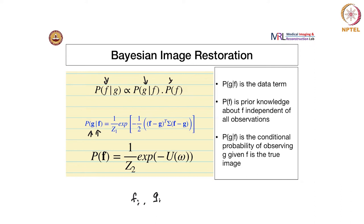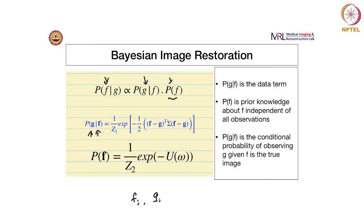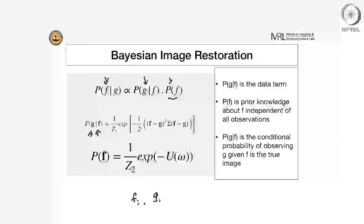This is the general framework for Bayesian image restoration. People get clever mostly by manipulating P(F) — the prior term, your knowledge of F that you want to impose. In the context of optimization, you can think of P(F) as the regularization term.